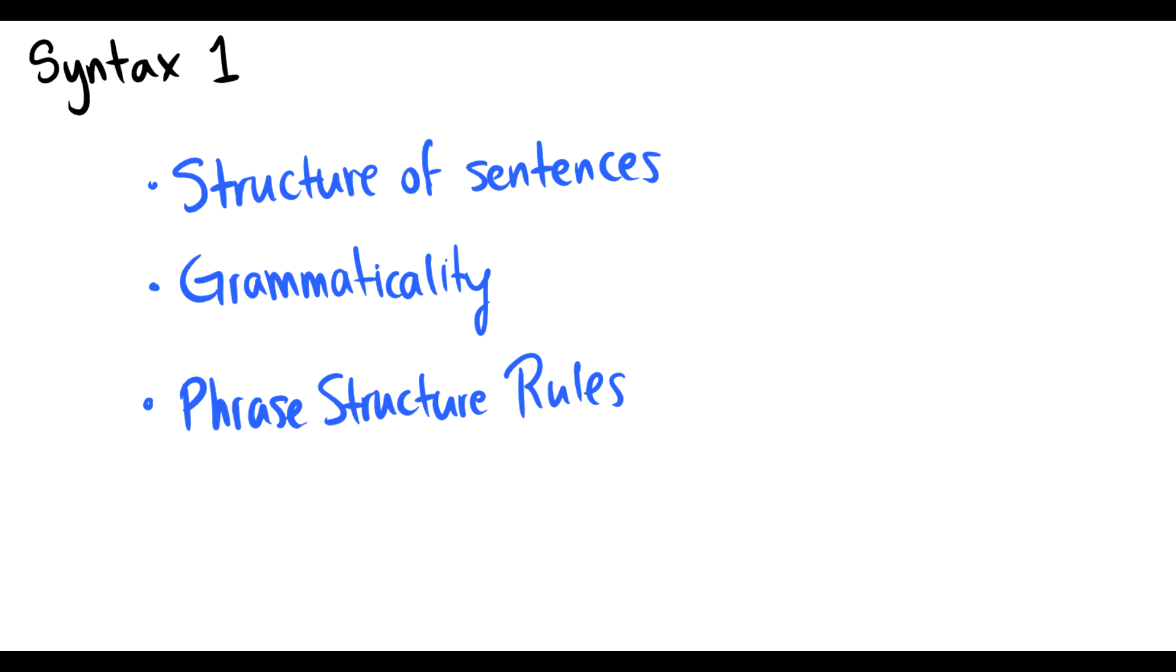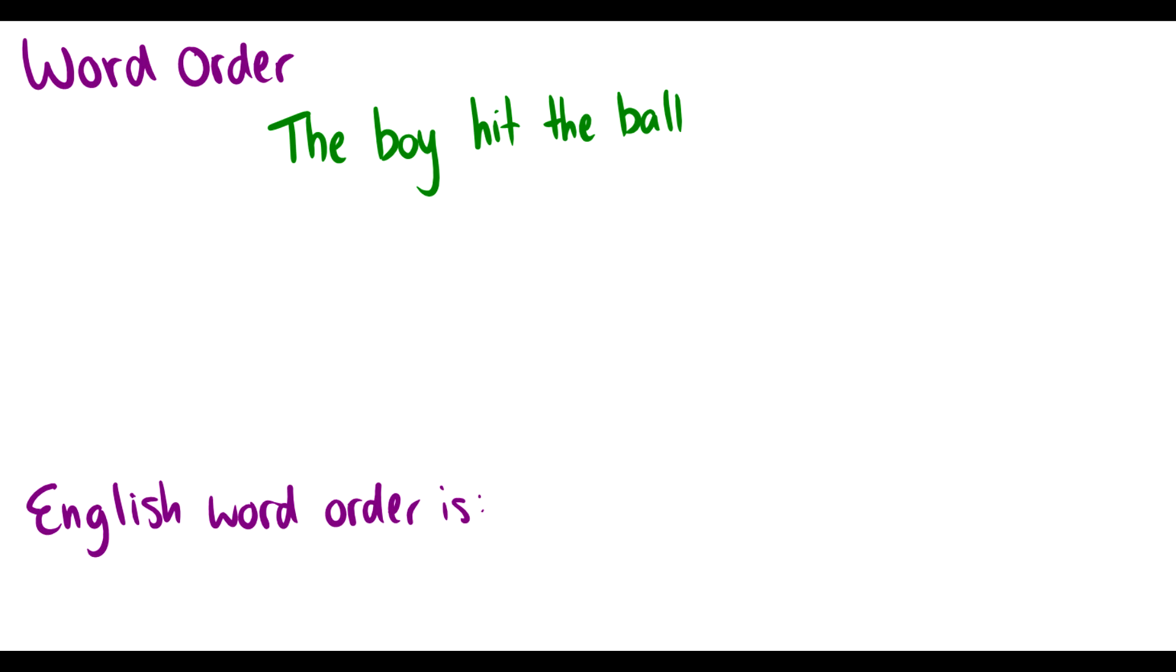If you've seen the overview video, this first part will be very straightforward. I have the same example here. In English, we take a sentence like 'the boy hit the ball' and we talk about word order. We talk about three different things.